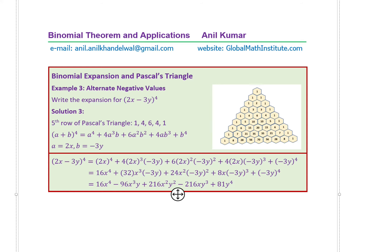Example 3 is alternate negative terms. We need to expand (2x−3y)⁴. You pick up the fifth row: 1, 4, 6, 4, 1 — those are your coefficients. Remember A=2x and B=−3y. Because of the minus 3y, all odd powers of B will be negative. So we get alternating negative terms in the answer. You can multiply all the coefficients and get the result as shown. You can always pause and do this yourself since this is examination practice.